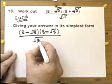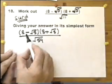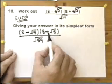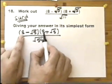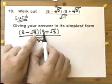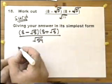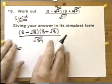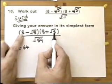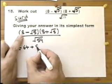We need to multiply both terms — the 8 and the root 5 — by both terms in the other bracket. The order doesn't matter as long as you multiply every term by every term. I'm going to multiply the 8 by the 8, and then root 5 by 8. So: 8 multiplied by 8 is 64, and root 5 times 8 gives 8 root 5.